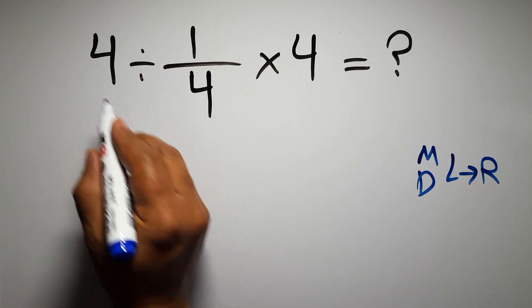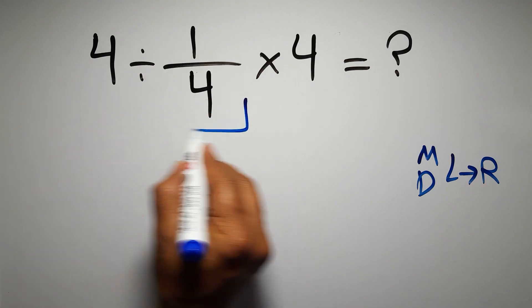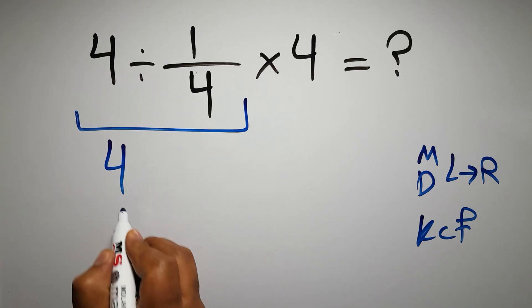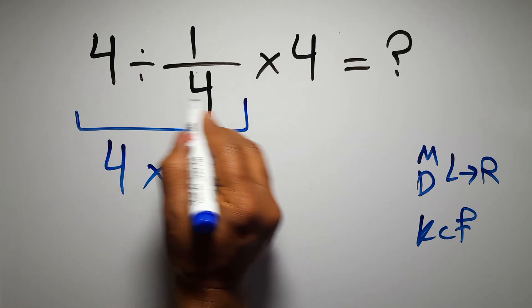So first this division: 4 divided by 1 over 4. According to the KCF rule, K stands for keep, C stands for change, and F stands for flip. We can write: keep the first fraction, change division to multiplication, and flip the second fraction.